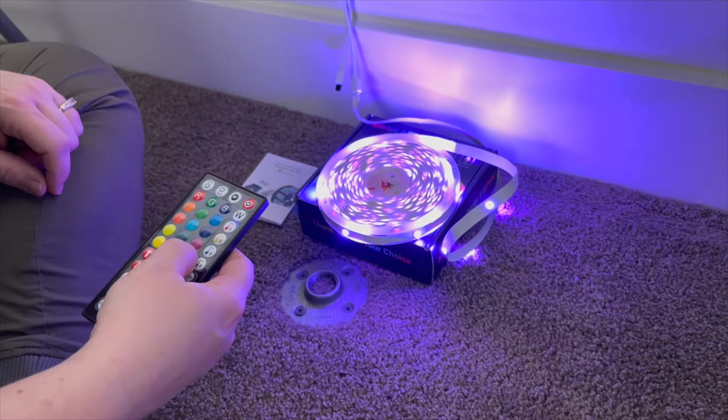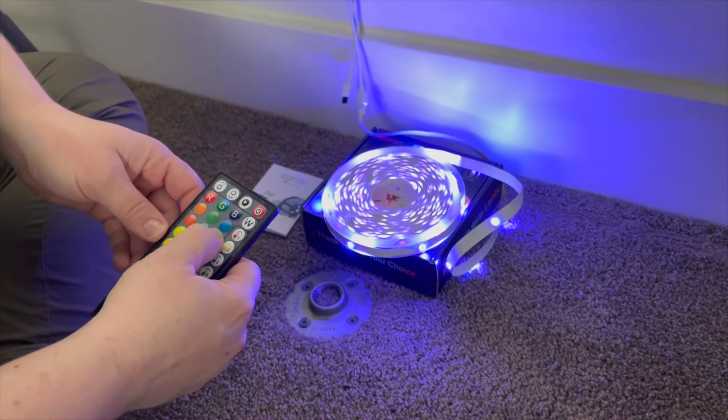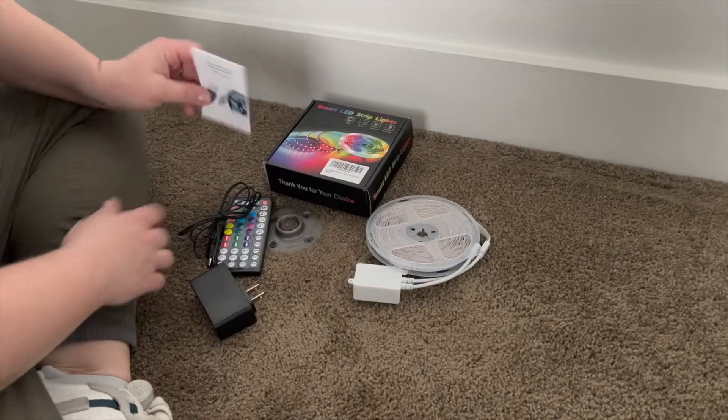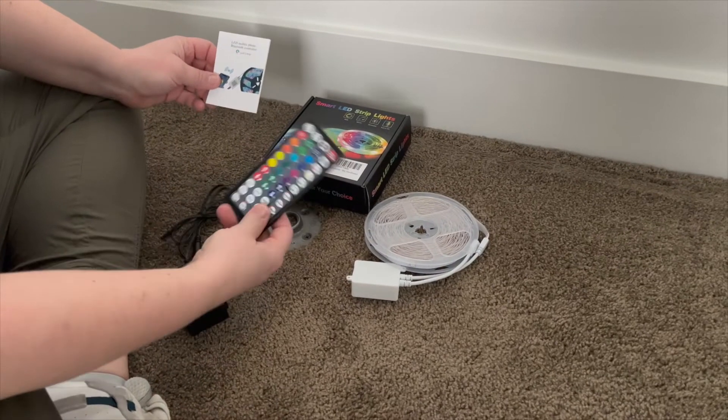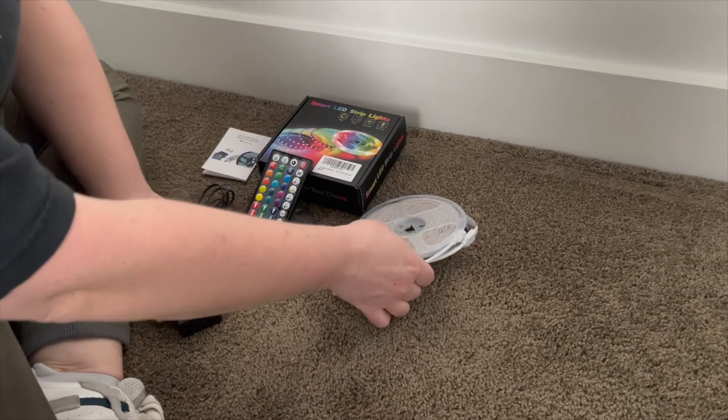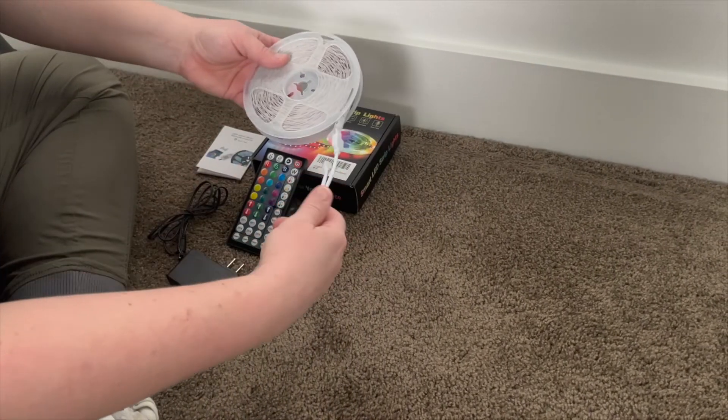In this video, we're going to show you how easy it is to set up these smart LED strip lights from Amazon. You can use this remote control that comes with them or they're Bluetooth compatible so you can download the app to control them with your phone. They come with everything you need so you're ready to go and for less than $20, these lights completely transform this room.